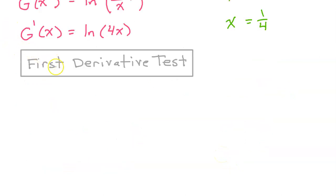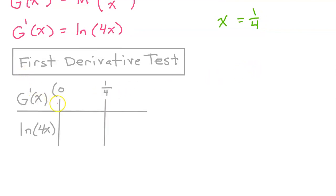Next, we need to determine if capital G of x has a relative max, a relative min, or neither at x equals one-fourth. We have learned two different ways to do this: the first derivative test or the second derivative test. I'm going to show you both. For the first derivative test, we make a sign chart to see if the first derivative changes signs at one-fourth.